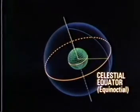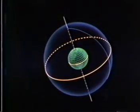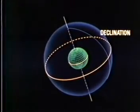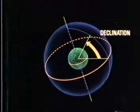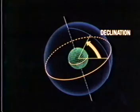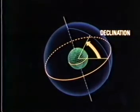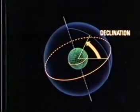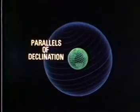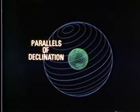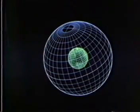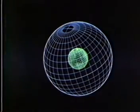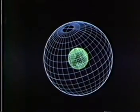The celestial equator is an extension of the Earth's equator. Declination is the angular measure from the celestial equator, north or south, to a given point on the celestial sphere, from 0 to 90 degrees. There are parallels of declination on the celestial sphere similar to parallels of latitude on Earth. When combined with celestial meridians, they form a celestial grid comparable to our terrestrial grid system.